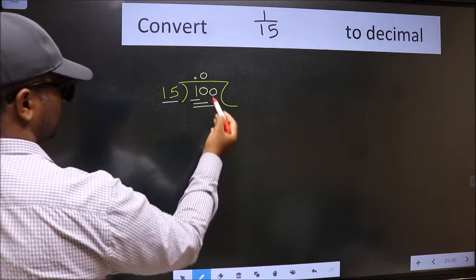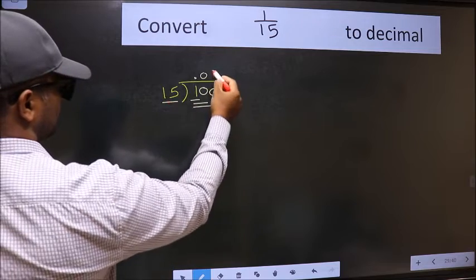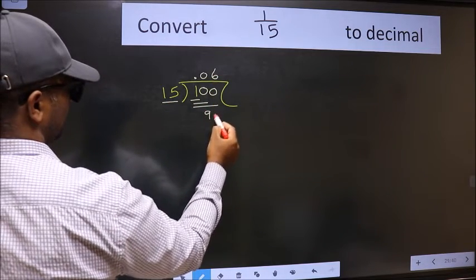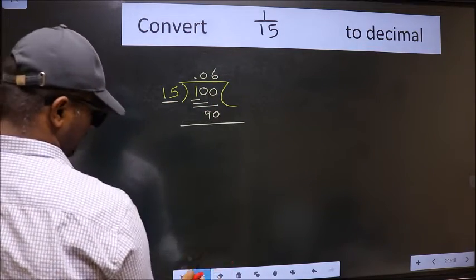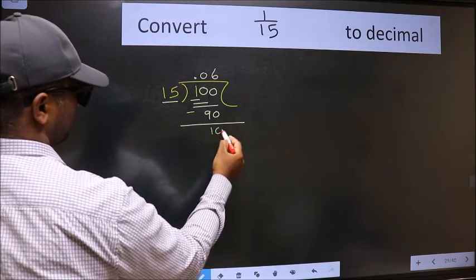So now 100. A number close to 100 in 15 table is 15, 6, 90. Now we should subtract. We get 10.